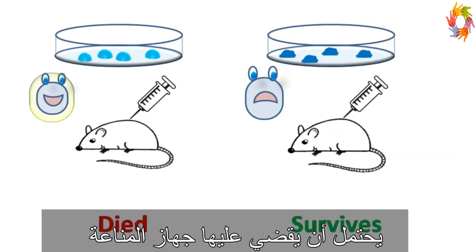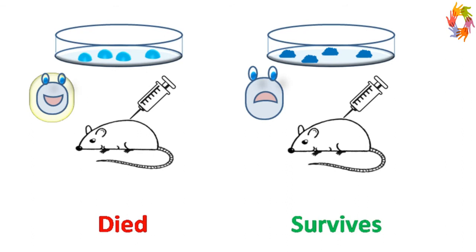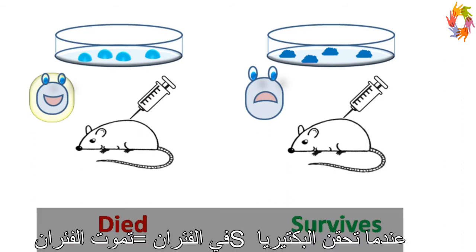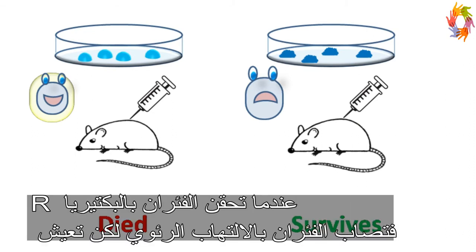When the cells of the smooth strain are injected in mice, the mice are killed. Whereas when the cells of the rough strain are injected in mice, the mice survive.